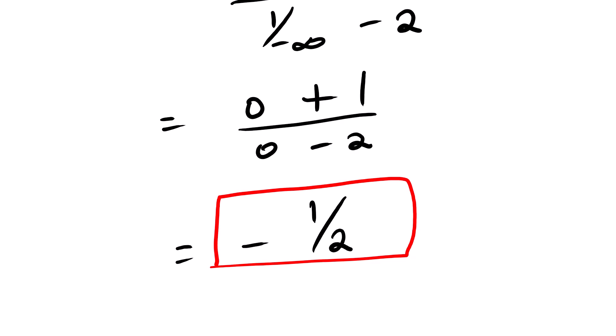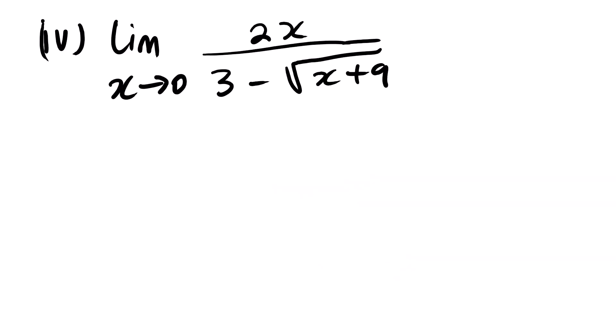There is a lesson video where we look at limits where x approaches infinity or negative infinity. Our next question has a radical sign on the denominator. Direct substitution will result in 0 over 0. So the first step we need to do is rationalize.